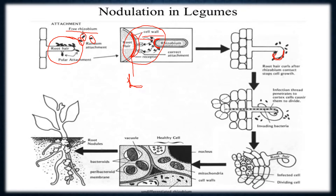Rhizobium are always ready to bind to root hairs. In the third diagram, Rhizobium are heavily crowded near the root hairs — many just bind there. There is synthesis of cytokinin, a cell-division hormone, which is responsible for cell division.